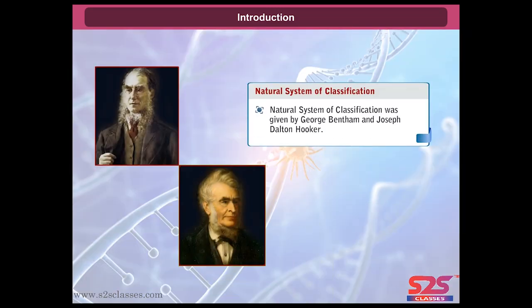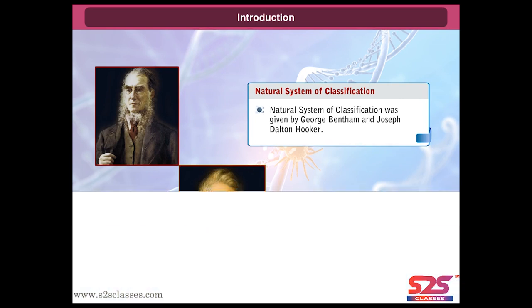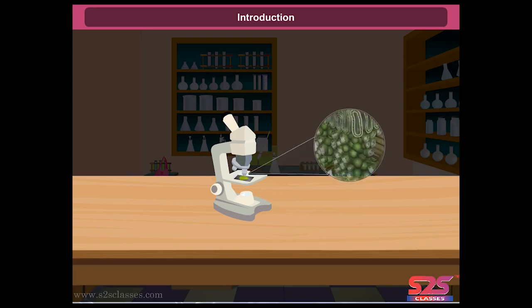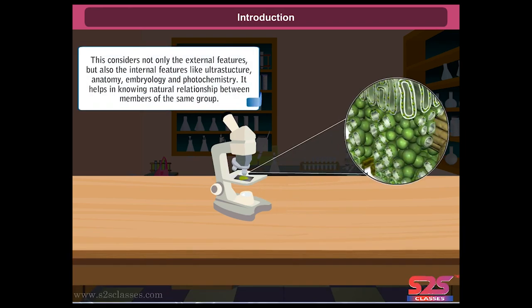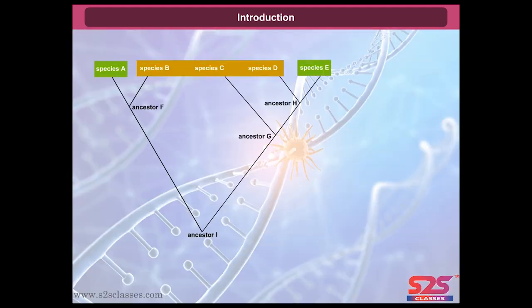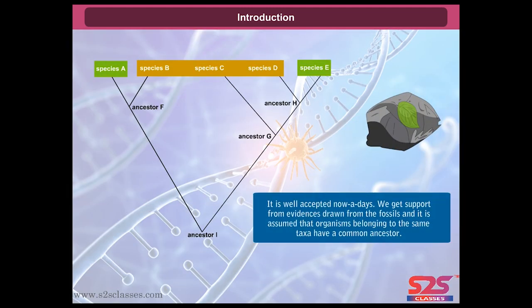Natural system of classification was given by George Bentham and Joseph Dalton Hooker. This considers not only the external features, but also the internal features like ultra-structure, anatomy, embryology, and photochemistry. It helps in knowing the natural relationship between members of the same group, and is well accepted nowadays.